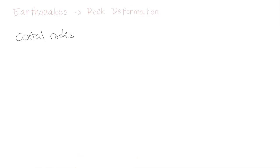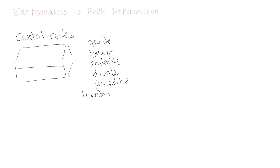So you have your crustal rocks. A big piece of crust. A rock could be granite, it could be basalt, it could be some andesite, it could be diorite, it could even be peridotite. So any of these rocks. It could be as simple as limestone at the bottom of the ocean. So you have this rock, this intact piece of rock.